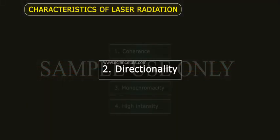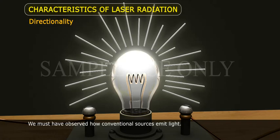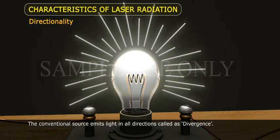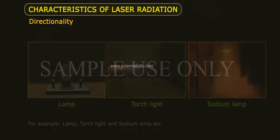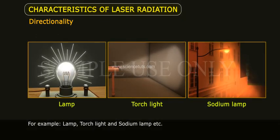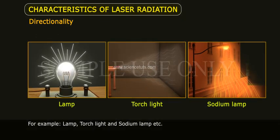Directionality. We must have observed how conventional sources emit light. The conventional source emits light in all directions, called divergence. For example, lamp, torch light, and sodium lamp.